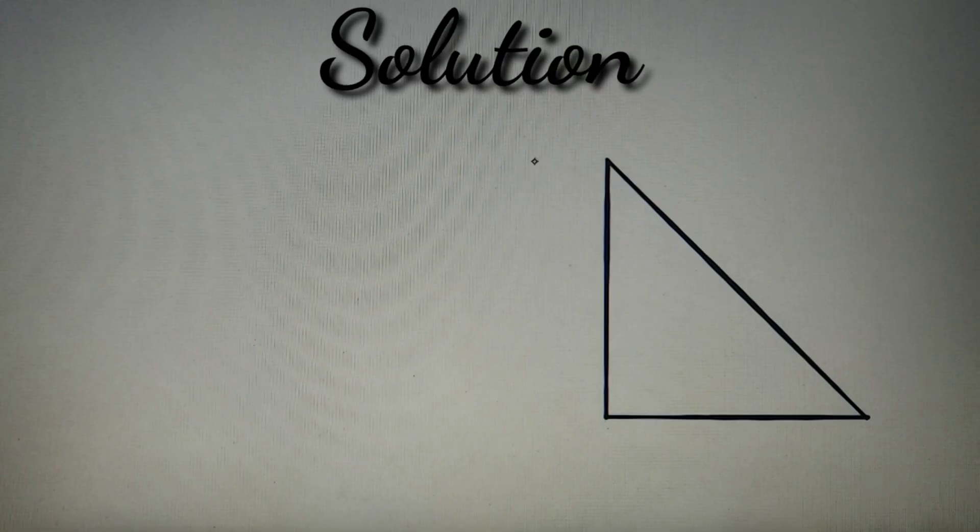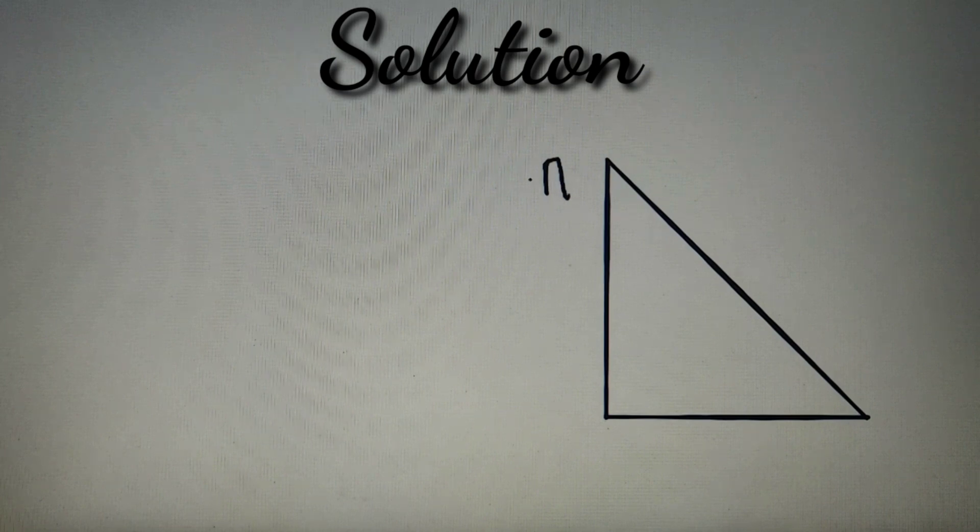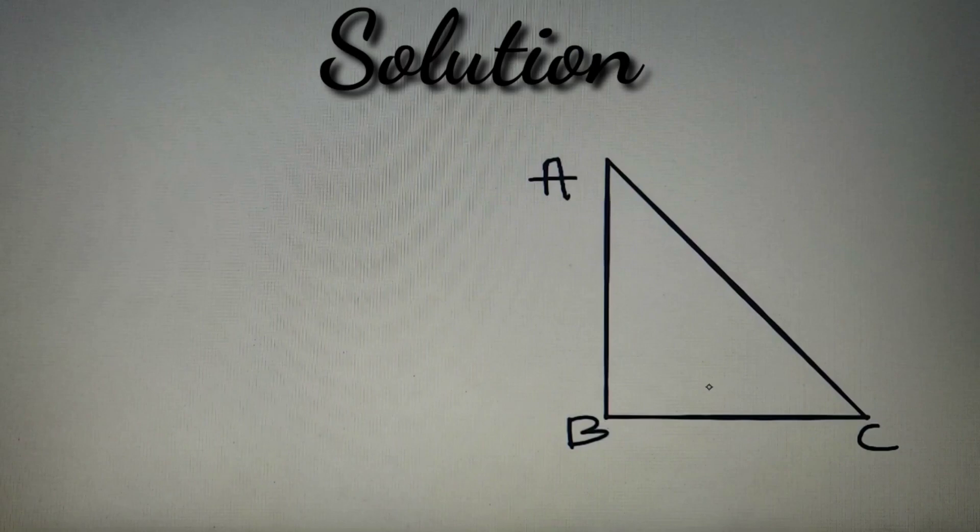I hope that you've tried the question and you've got the solution. If you didn't, then let's check the solution. According to the given question, we are given a right angle triangle ABC. Let's name the vertices as A, B, and C respectively.